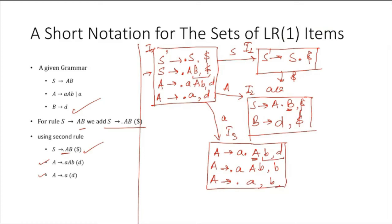From I2 we can get a move for capital-B, which will be called I4. In I4 we have A to A capital-B dot, with lookahead dollar. After the dot there is nothing, so this is a reduce item. Also, B dot D is there, so for D we can have I5, giving us B to D dot with lookahead dollar — this is also reduced.